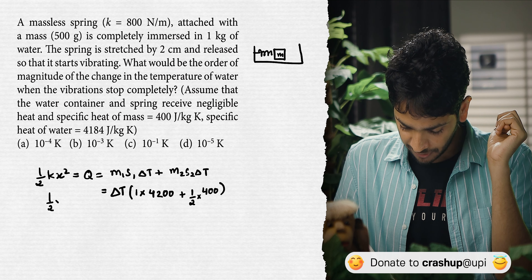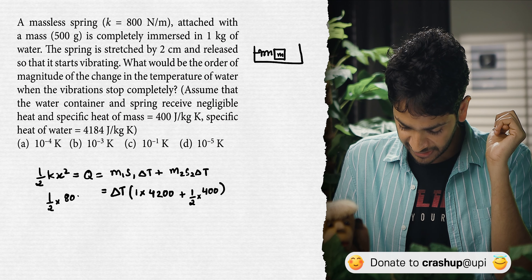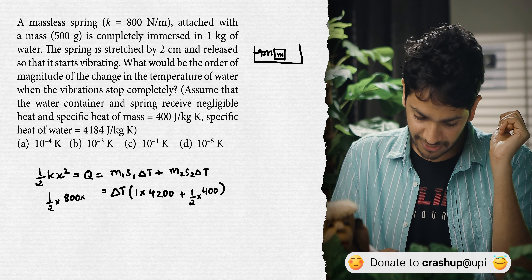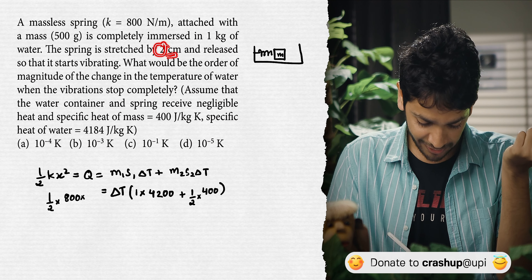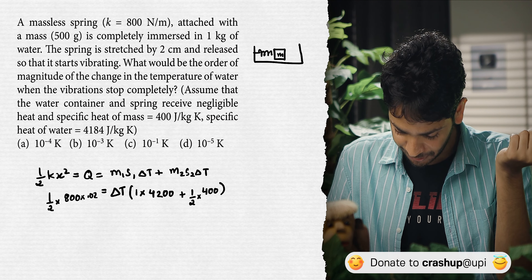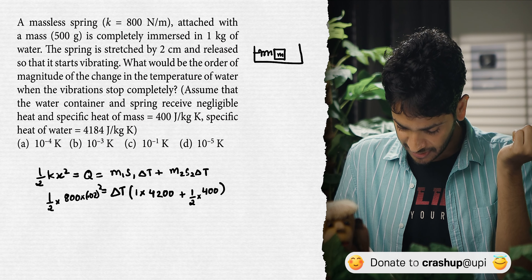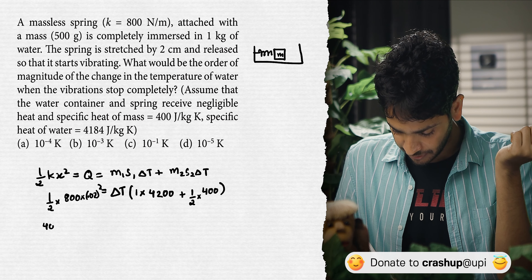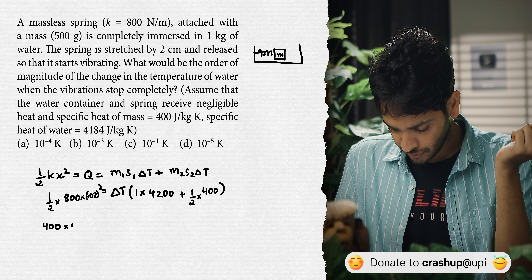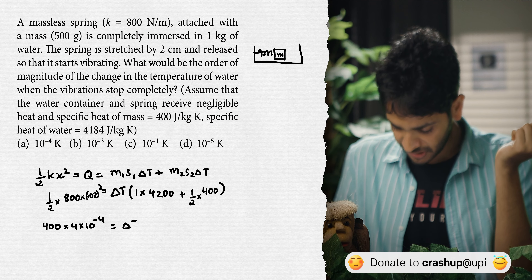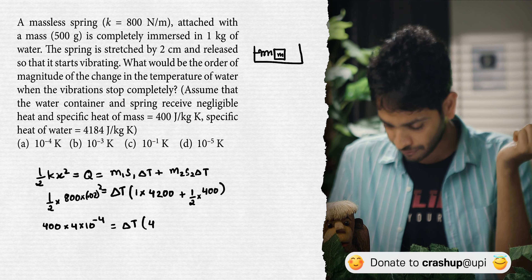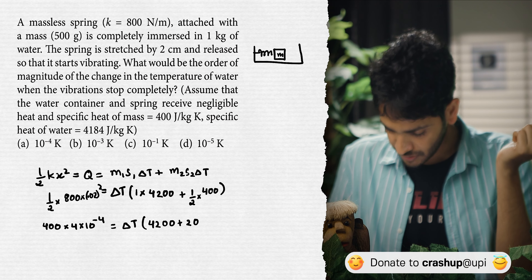Specific heat capacity of the mass s₂ = 400 J/kg·K. For the left side: k = 800, x = 0.02 m (not 2 — must use SI). So: 400 × 4 × 10⁻⁴ = ∆T × (4200 + 200).